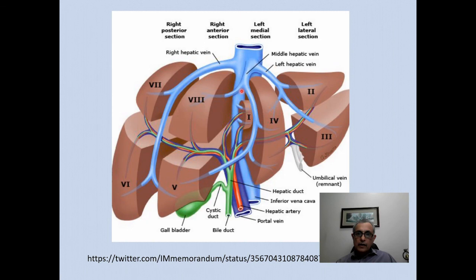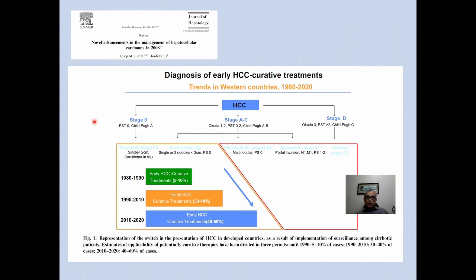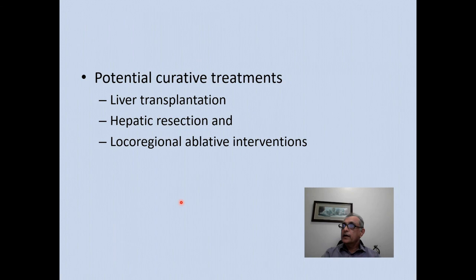The liver is divided into eight segments: segment one is the caudate lobe, then segments two through eight, defined by the left, middle, and right hepatic veins, as well as branches of the portal vein with its right and left branches. From 1980 to 2020, the diagnosis of early HCC and curative treatments have increased from 5–10 percent to approximately 40–60 percent.